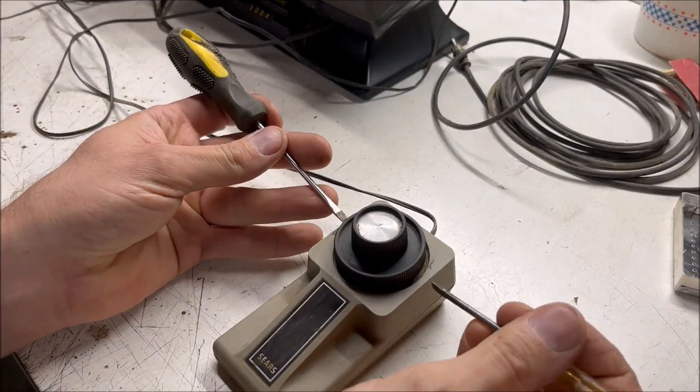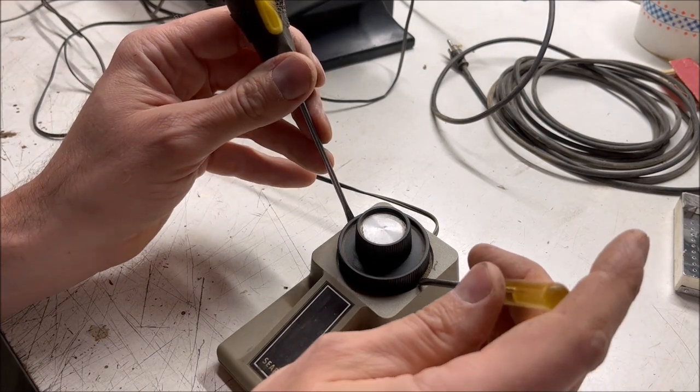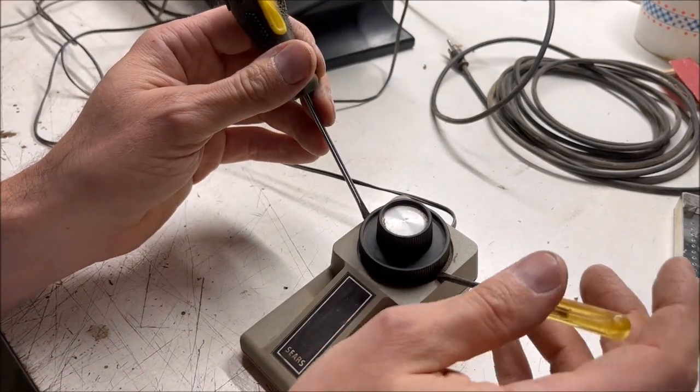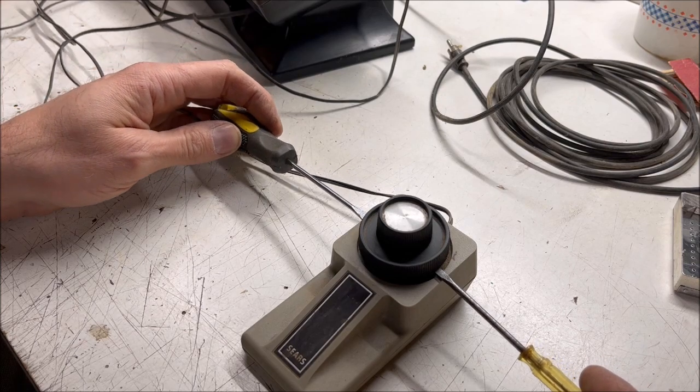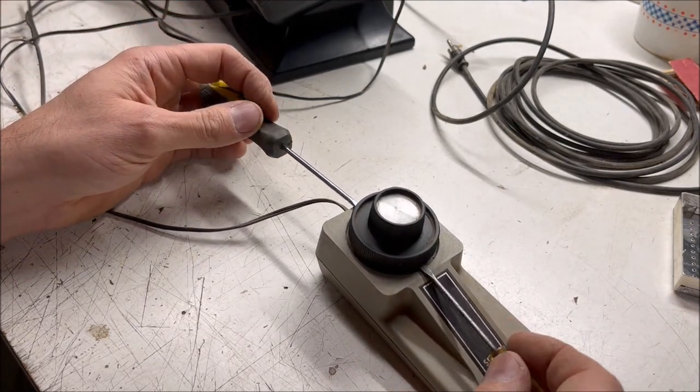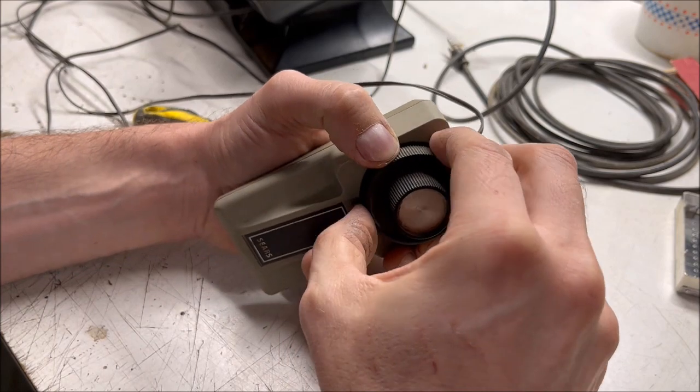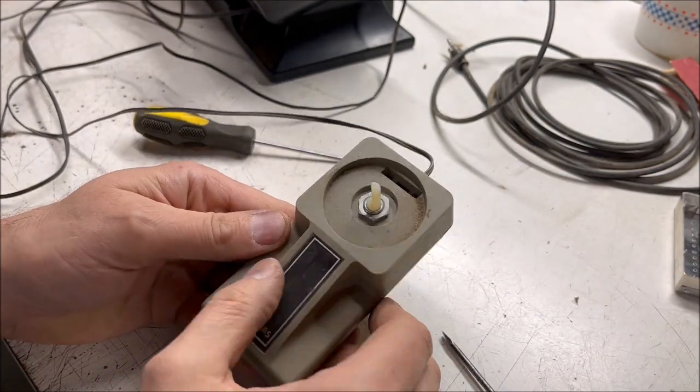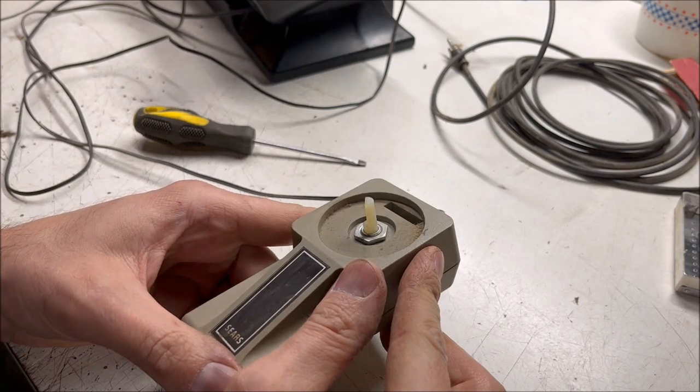I'm just going to take off the knob to this controller. The way I prefer to do it is get these two small flathead screwdrivers under there on opposing sides so you aren't torquing the knob one way or another, and then you can just kind of lift up little by little. There we go.